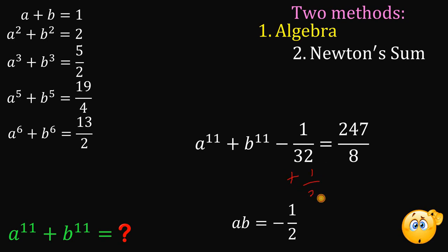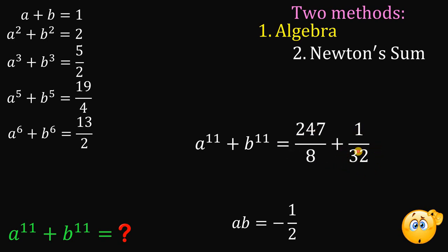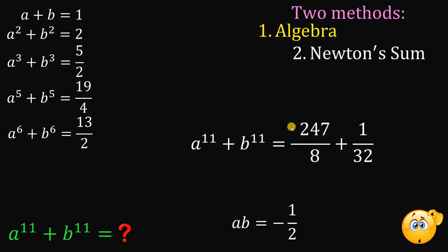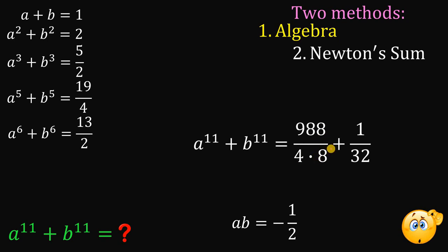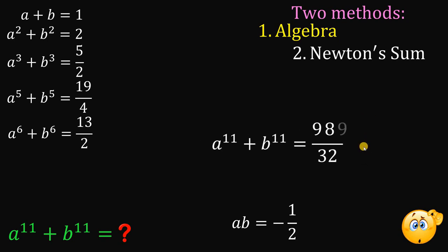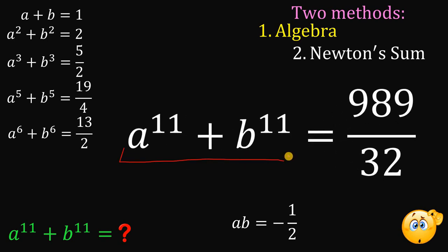Adding 1 over 32 to both sides, we get 247 over 8 plus 1 over 32. Multiplying 247 over 8 by 4 over 4 gives 988 over 32. Since we now have the same denominator, we can add: 988 plus 1 gives us 989, all over 32. That is the numerical value of a raised to 11 plus b raised to 11, and that is the answer using algebra.